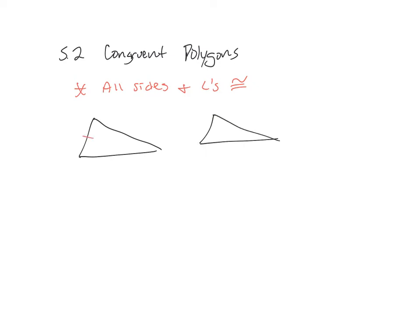Alright, 5.2 was congruent polygons. And so the big thing to remember with anything that's congruent is all sides and angles need to be congruent. And so we did talk about - and again triangles are just easier to use and draw and so forth.